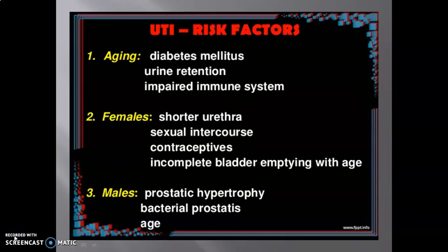In this slide we learn about UTI risk factors. Number one is aging — diabetes mellitus, urine retention, and impaired immune system are involved. Number two is female — including shorter urethra, sexual intercourse, contraceptive use, and incomplete bladder emptying with age. Number three is male — prostatic hypertrophy, bacterial prostatitis, and age.